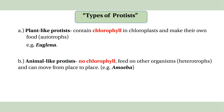Animal-like protists have no chlorophyll and no pigment. They feed on other organisms, depend on other organisms, use heterotrophic nutrition, and can move from place to place.